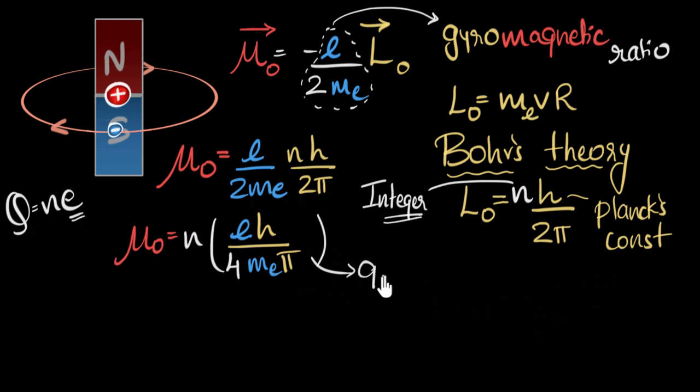If you substitute, this turns out to be roughly 9.3 times 10 to the power minus 24, a very tiny value. Now what is the units? Now at first you might think, oh my god, so many units I have to substitute, but don't worry, it's magnetic moment. We've seen magnetic moment is current times area. So current is amperes times area is meter square.